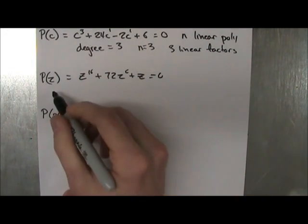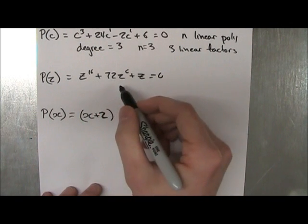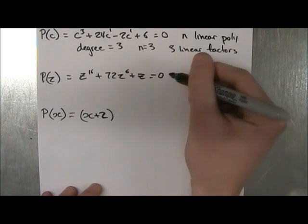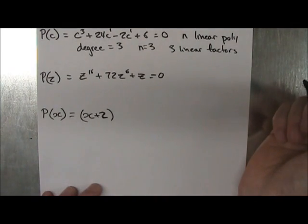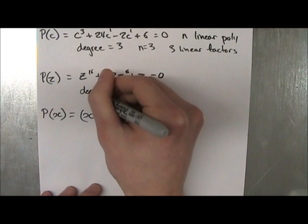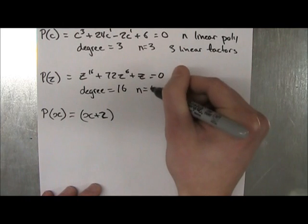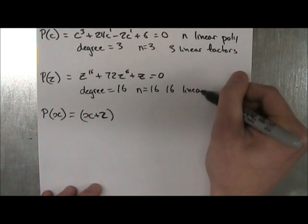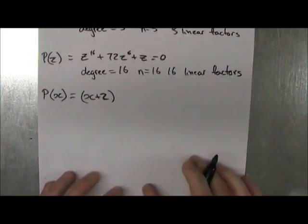Moving on, we have p to the z is equal to z to the 16 plus 72z to the 6 plus z is equal to 0. So we look for the highest power, which is z to the 16. So our degree is equal to 16, which means our n is 16, which means we have 16 linear factors.